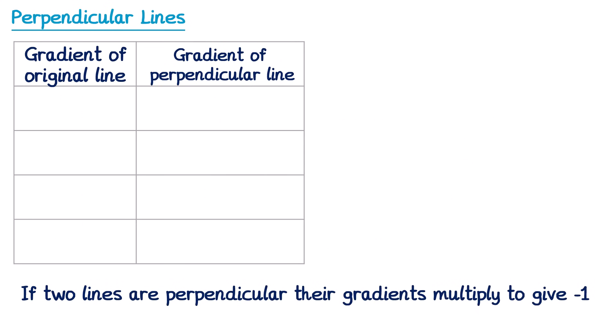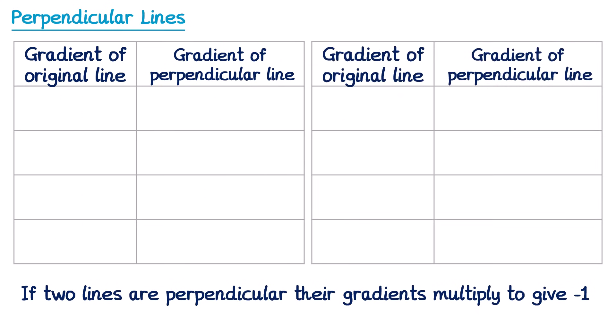Let's have a look at some more examples. If the gradient of the original line was 9, we know the gradient of the one that's perpendicular is going to be negative, and it's also going to be the reciprocal. The reciprocal of 9 is one ninth, so the perpendicular gradient is negative one ninth. If the original line had a gradient of negative 7, we do the reciprocal of 7 which is 1 over 7, and since the original line is negative, the new one will be positive — so positive one seventh.